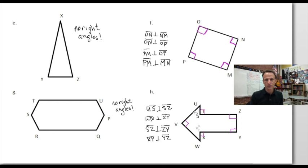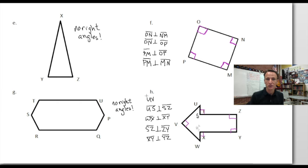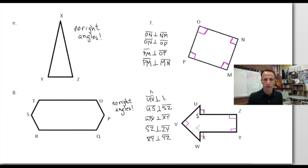Oh, we didn't do the tricky one — UV and VW. So I'm going to write that up here where I have more room. You see how important it is to go back and check yourself? Line segment UV is perpendicular to VW. Good fun there, but there's more yet to do.